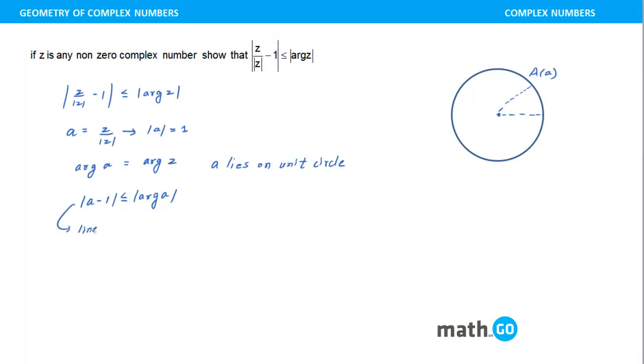So a minus 1 is a line segment, right? Joining a with 1, 0. This point is obviously what? This is 1, 0, right? And what is the argument of z? And because if you see this is 1, 0, so that means this is also the real axis, right? So this is the x and this is theta. So this argument z is nothing but this theta, right? Clear?